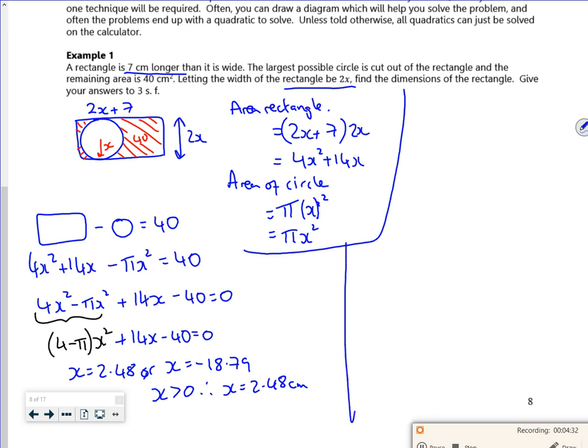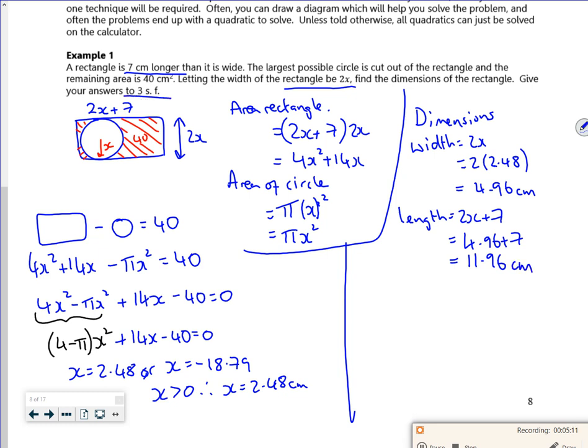So then for the dimensions, I'll just do it over here. I know the width is 2x, so that's 2 lots of 2.48, which is 4.96. And the length is 2x plus 7, so it's just 4.96 plus 7, which is 11.96 in centimeters. It says 3 sig fig at the end, so that one's okay to 3 sig fig. That one will have to be 12.0 centimeters.